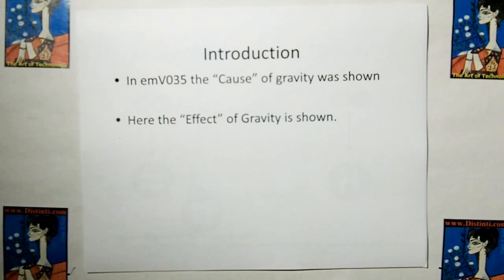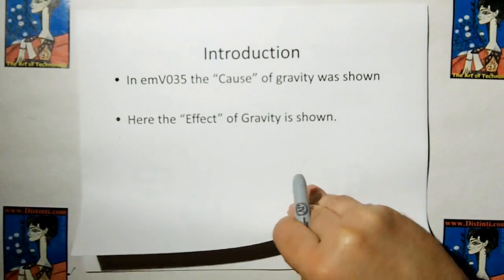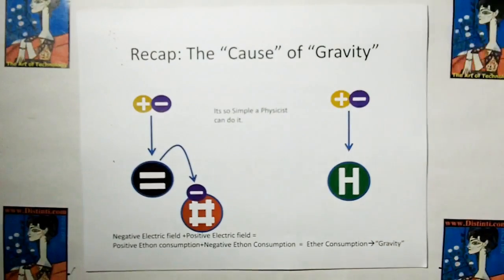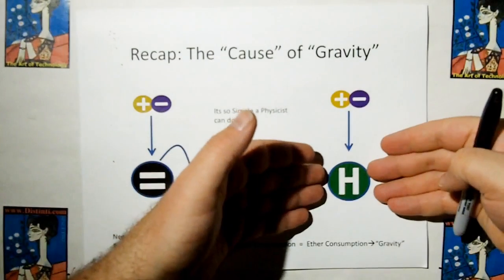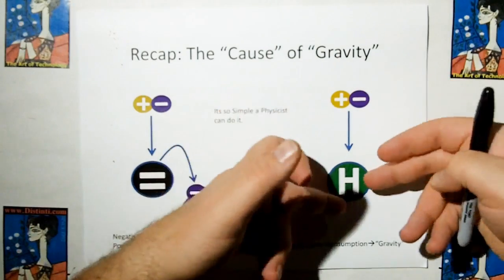In this video I'm going to show that the effect of gravity is electromagnetic induction. So let's recap the cause of gravity. We have a mass that consumes ethons, both pairs, positive and negative.